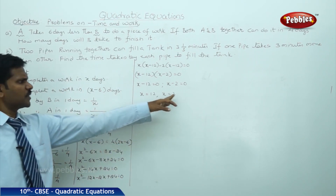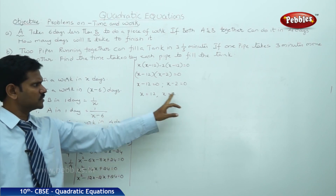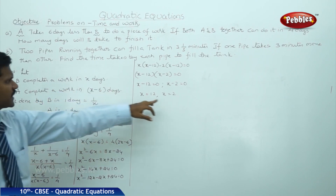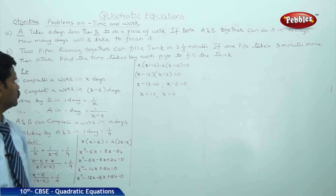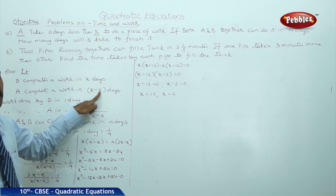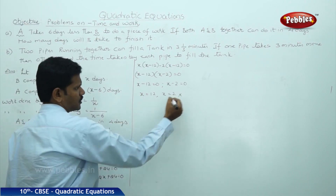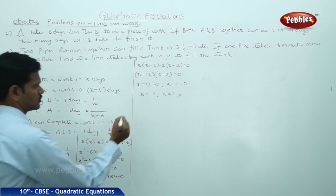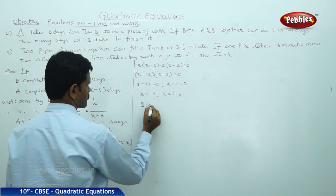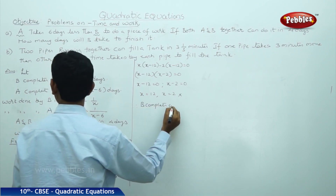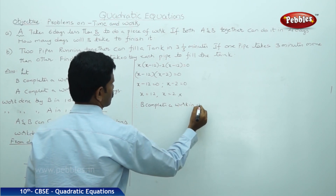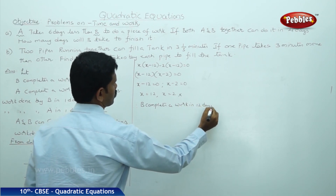Now, both are positive answers. Which one is the right value? If we take X equals 2, then A completes work in 2 minus 6, that is minus 4 days, which is not a suitable value. Therefore, B completes a work in 12 days.